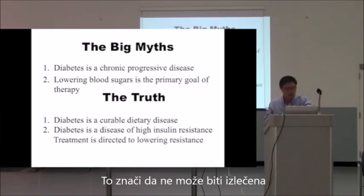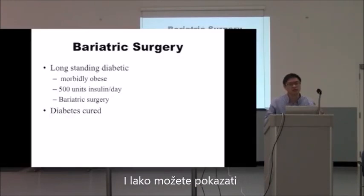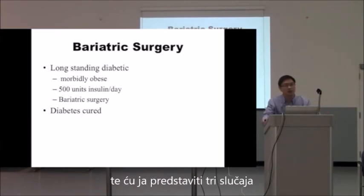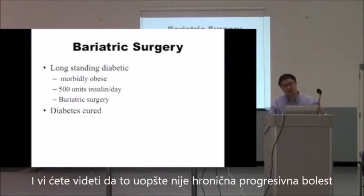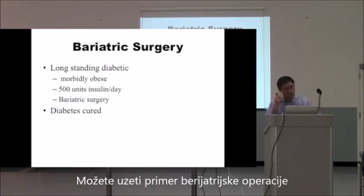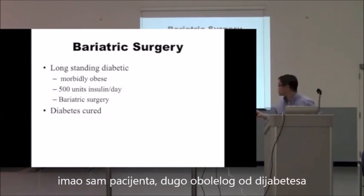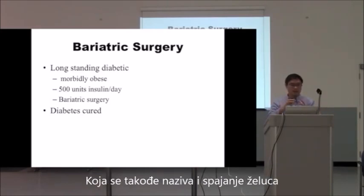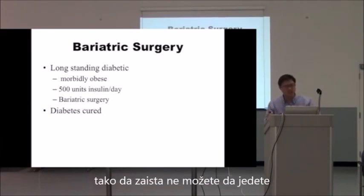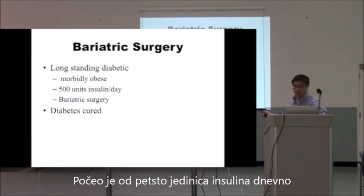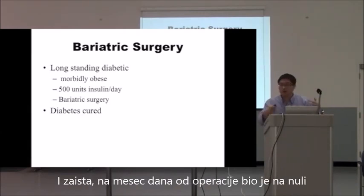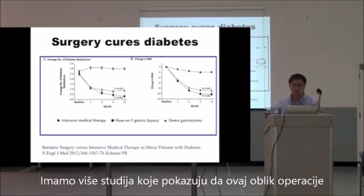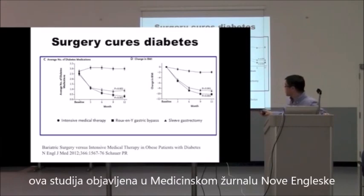Type 2 diabetes is reversible, as shown by many cases. Take bariatric surgery — I had a patient who was a long-standing diabetic and morbidly obese. He underwent bariatric surgery, also called stomach stapling, where they cut your stomach to the size of a walnut so you simply can't eat. He started on 500 units of insulin a day, and after about a month following surgery he was on zero. His diabetes was essentially gone. We have multiple studies confirming that this type of surgery cures diabetes.